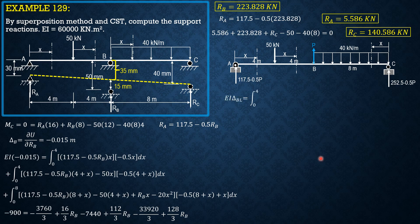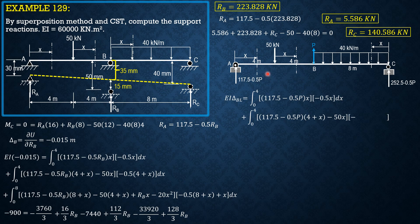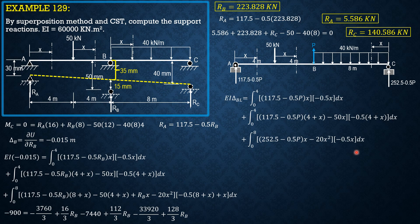EI times the deflection at B due to loading equals: integral from 0 to 4 of (117.5 minus 0.5P) times x, with derivative negative 0.5x, dx; plus integral from 0 to 4 of [(117.5 minus 0.5P)(4+x) minus 50x] with derivative negative 0.5x, dx; plus integral from 0 to 8 of [(252.5 minus 0.5P)x minus 20x²] with derivative negative 0.5x, dx.